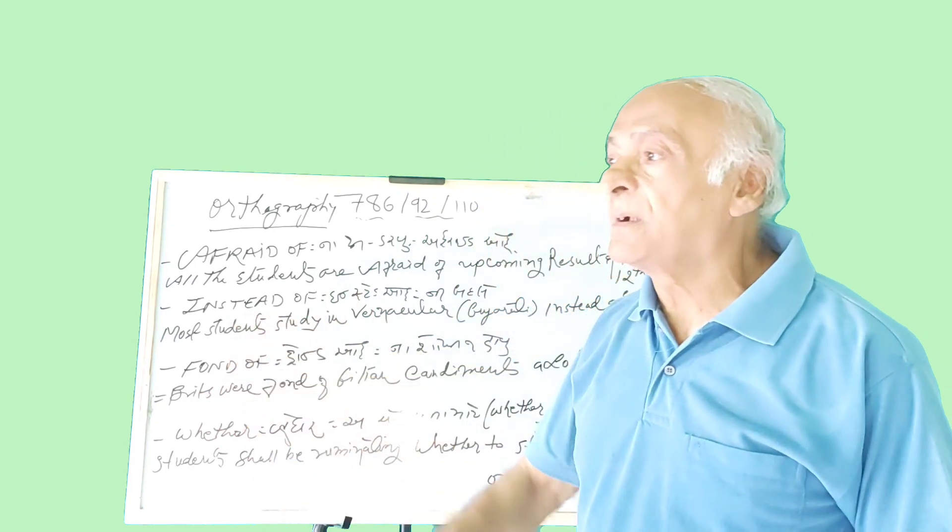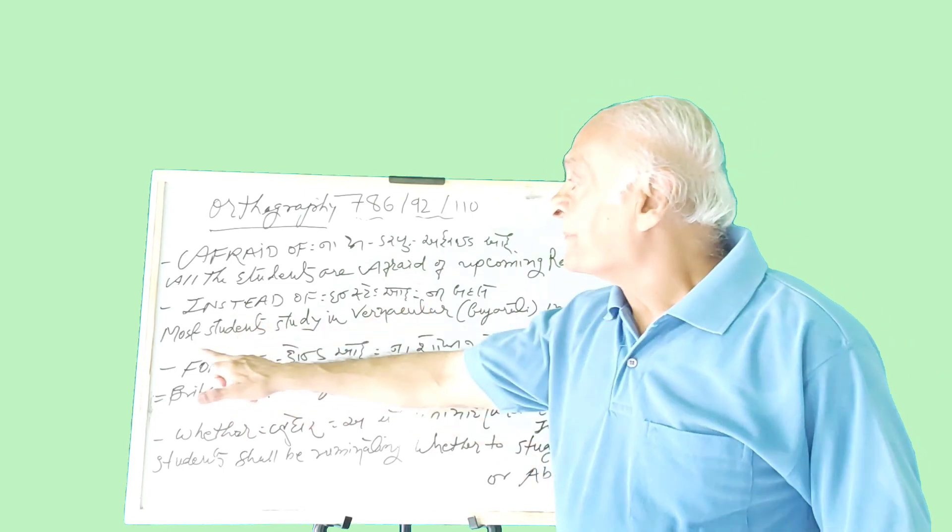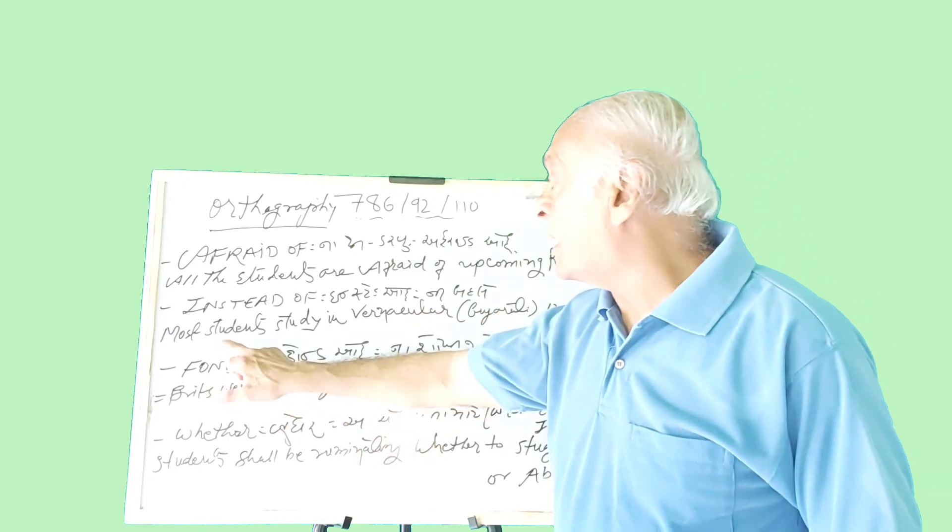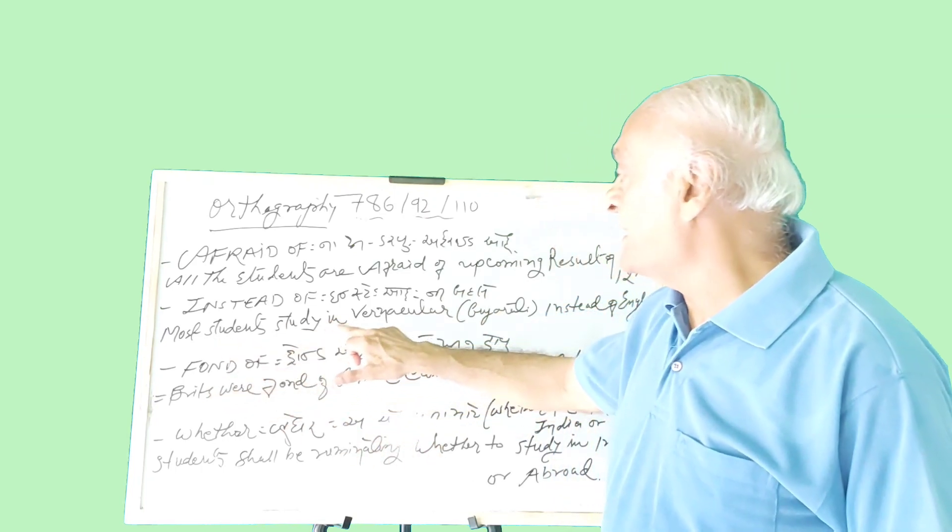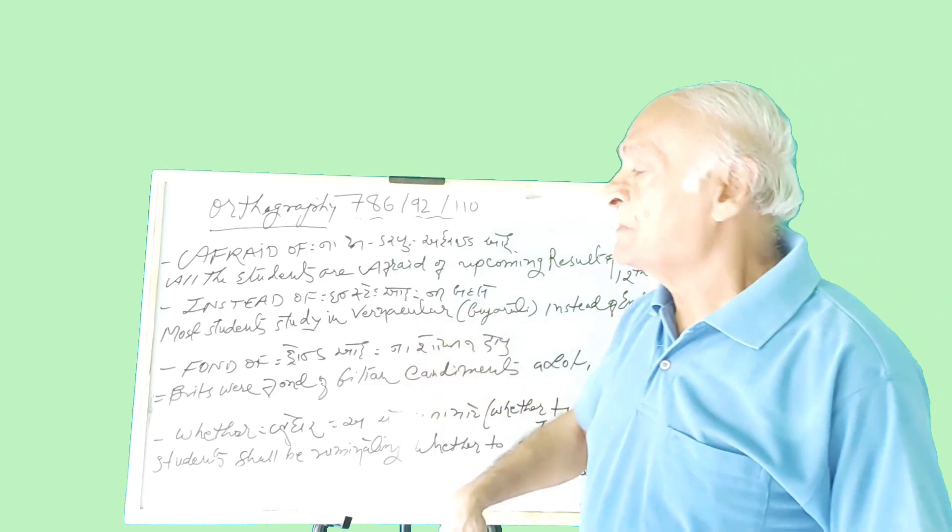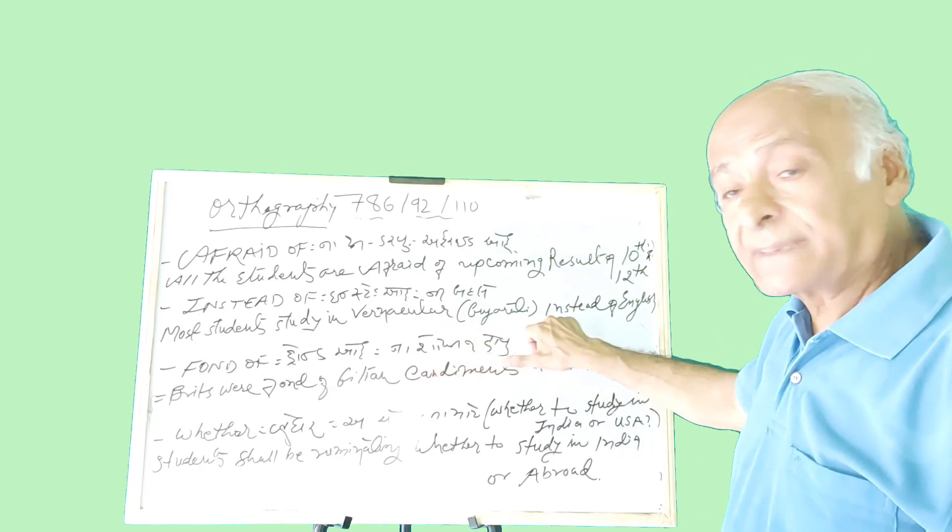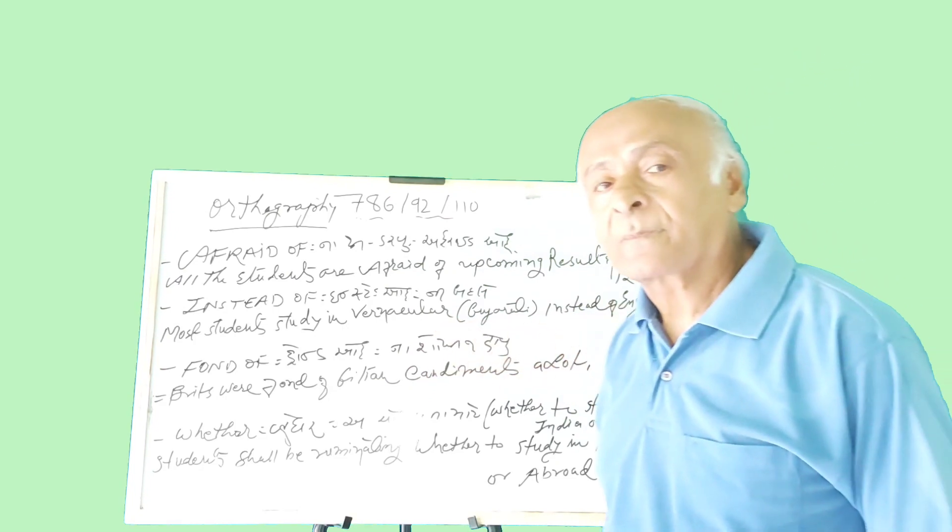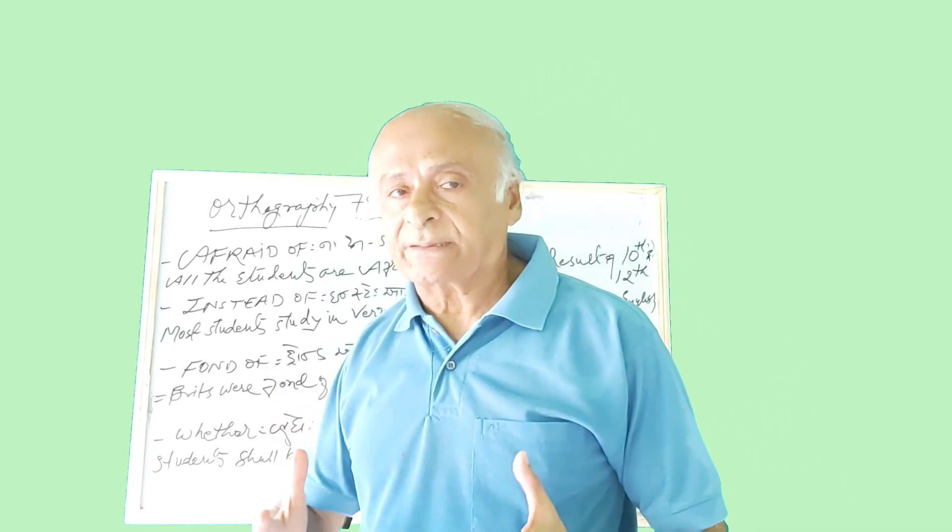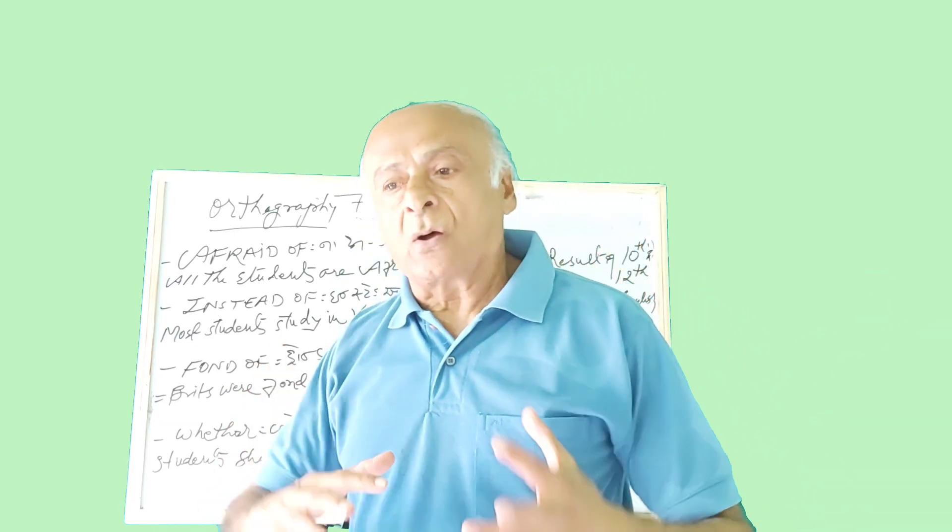These are the kinds of applications of instead of. One sentence is formed by me over here: most of the students study in vernacular Gujarati instead of English. So here instead of... People drink tea instead of milk.